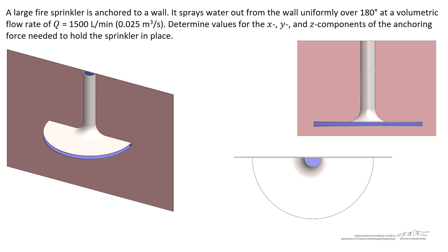In this problem we've got a large fire sprinkler that's anchored to a wall. It sprays water out uniformly in all directions away from the wall. From this angle, the water flows down the sprinkler head and then outward in all directions — in directions parallel to the wall and in a direction that comes straight out from the wall. If we look straight downward on it, the fluid flows into the screen and is turned in all directions, both parallel to the wall and normal to the wall.